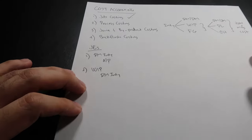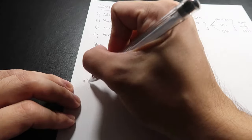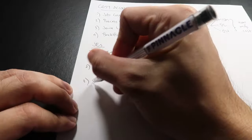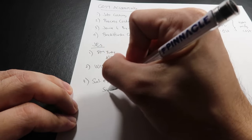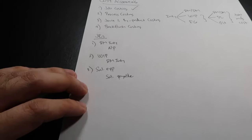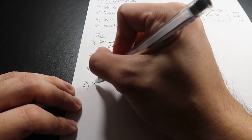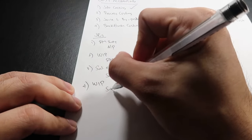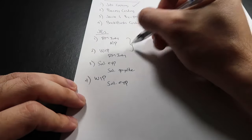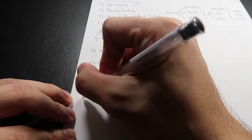So we charge it into WIP. Third entry: for labor — debit salaries expense, credit salaries payable. And then we also charge this to work in process: debit work in process, credit salaries expense.